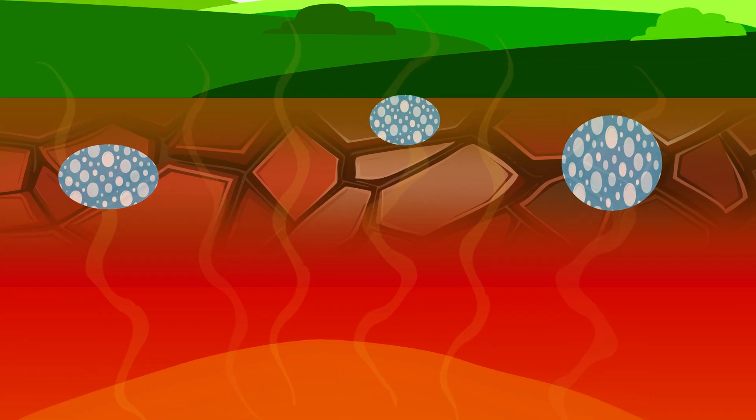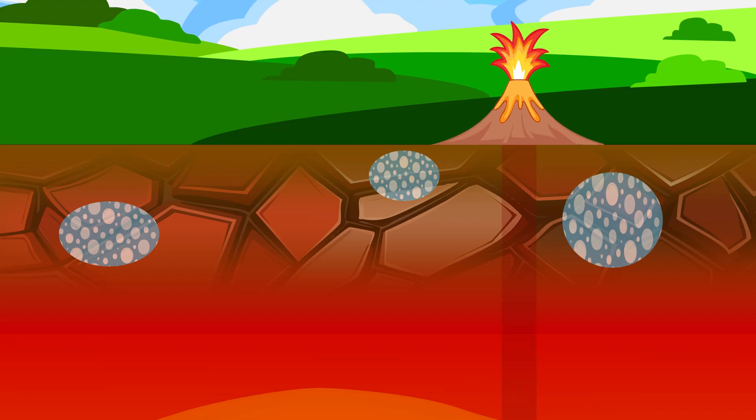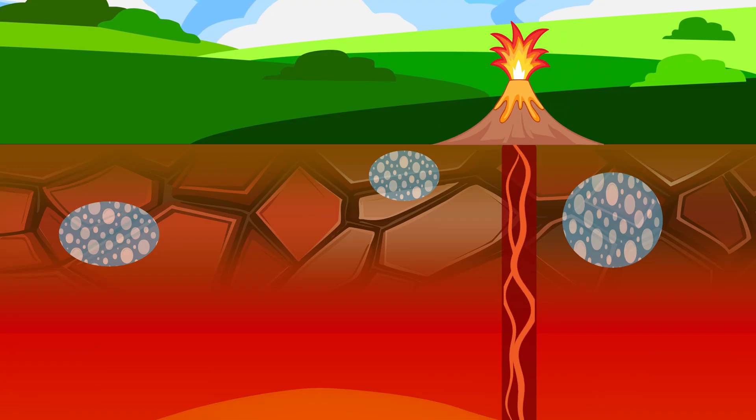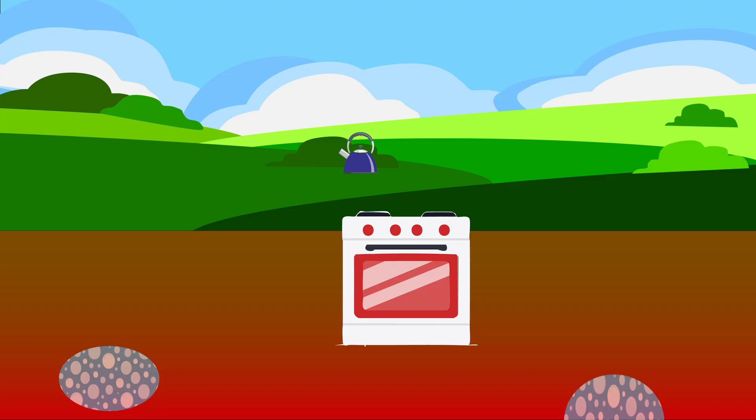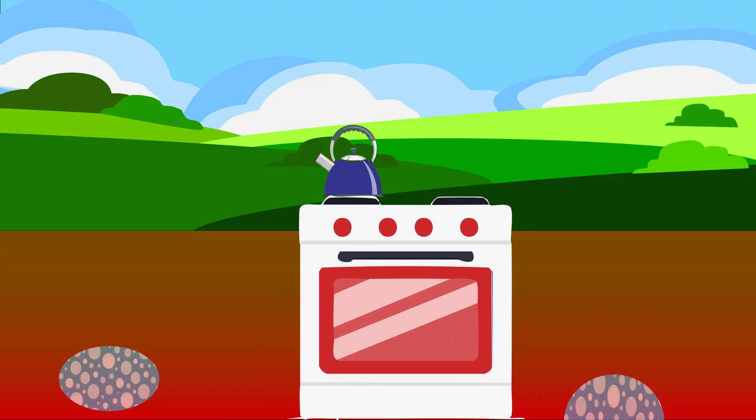This is especially common near volcanoes and tectonic plate boundaries where there are pathways from deep inside the Earth to the surface. We can drill wells to reach that steam and use it to generate electricity. Think of it like a kettle on a stove. The Earth's heat is the stove, the hot rocks underground are the kettle, and the water inside becomes steam.